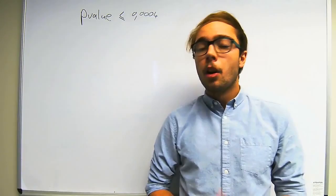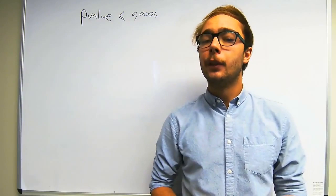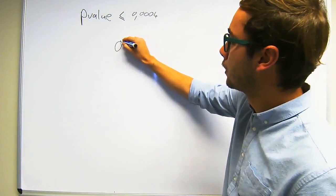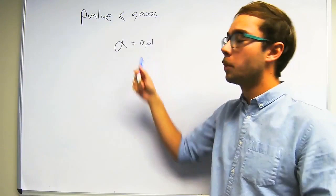The last question asks for a conclusion given a significance level of 0.01. Looking at our significance level alpha equals 0.01, it is clear that our p-value of 0.0004 is a lot smaller than our significance level, and therefore we can reject the null hypothesis H0.